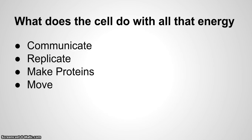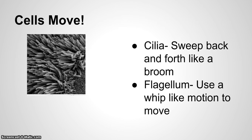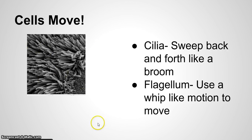What does a cell do with all that energy? Well, it communicates, it replicates, it makes proteins, and it moves. Cells move — they have cilia that sweep back and forth like a broom, and flagella that use a whip-like motion to move. Right here we have a picture of cilia, and they're kind of like a broom, just sweeping back and forth. The flagellum is really whipping. You can have one or two flagella, or many, many cilia like we see here.